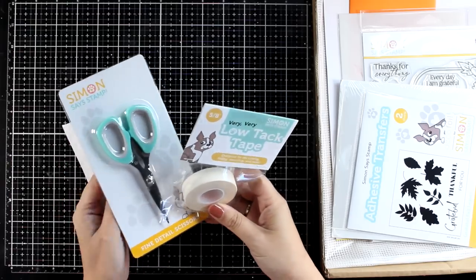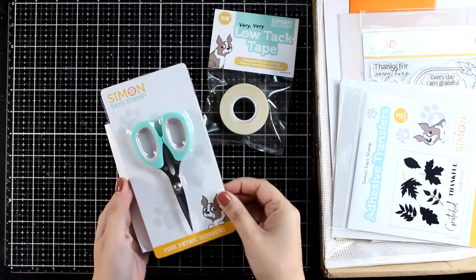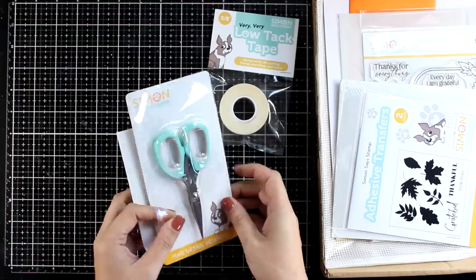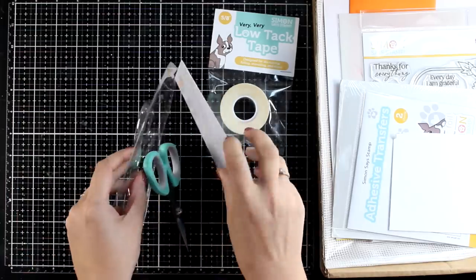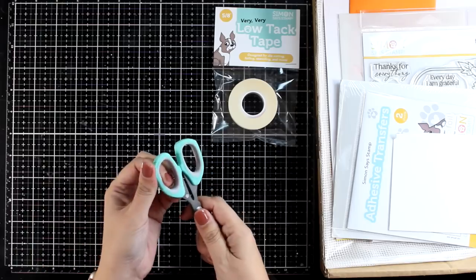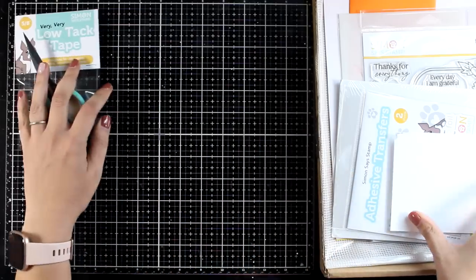I always like when the kits come with products that you can use again and again - tools are my favorites. So in this kit you do get a pair of scissors. These are non-stick and they are pointy and really sharp. I believe they are perfect for fussy cutting and I will use them in this video.